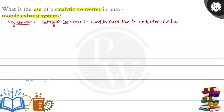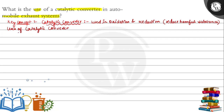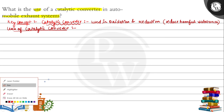It is helpful in reducing harmful substances. The catalytic converter helps reduce harmful pollutants. Now let's talk about its uses — the uses of the catalytic converter in the automobile exhaust system.